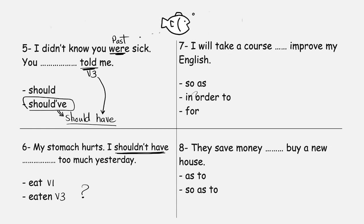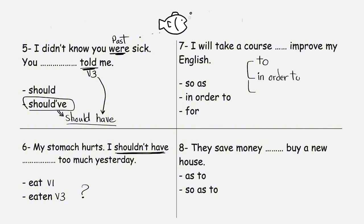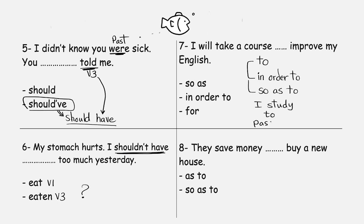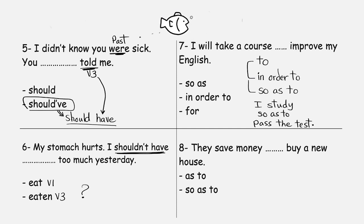'I will take a course blank improve my English — to, in order to, or so as to?' We usually say 'I will take a course to improve my English,' but there are two other ways to say 'to': 'in order to' or 'so as to.' They all have the same meaning. 'I study to pass the test' — you can replace 'to' with 'in order to': 'I study in order to pass the test,' or 'I study so as to pass the test.'